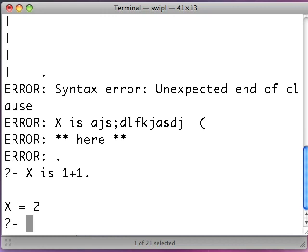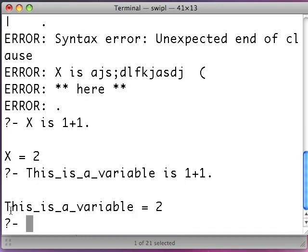So this illustrates one of the first concepts here. This thing, X is a variable. Variables in Prolog, they all start with uppercase. So X would be variable. Uppercase Y would be variable. But you can make it multiple words like this. You can say something like this, this_is_a_variable. This is 1 plus 1, right? So you can separate them out with little underscores here. As long as it starts with a capital letter, then it is a variable in Prolog.